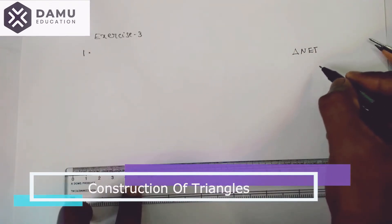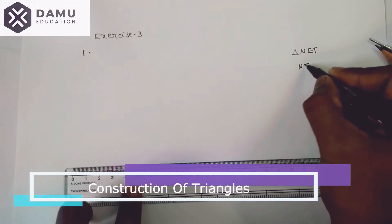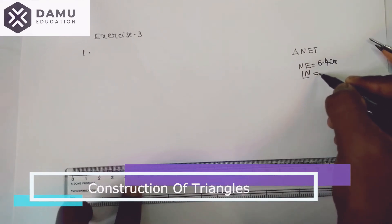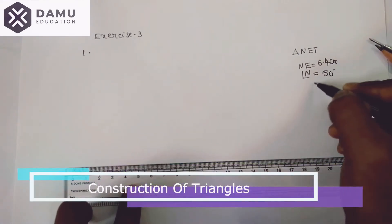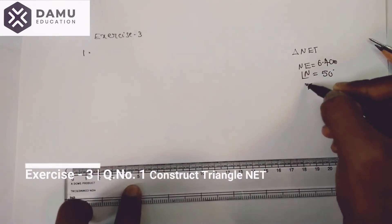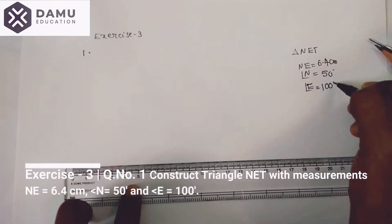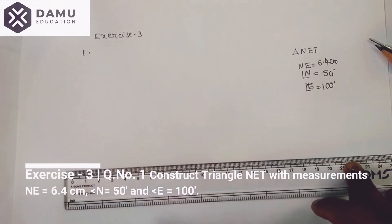The dimensions given are: NE equals 6.4 centimeters, angle N equals 50 degrees, and angle E equals 100 degrees. Using these measurements we have to draw the triangle.